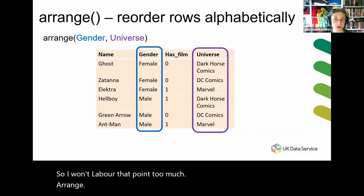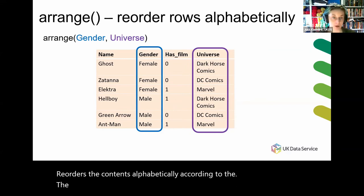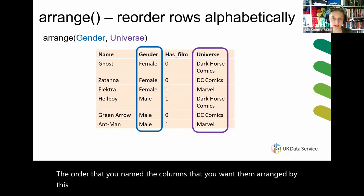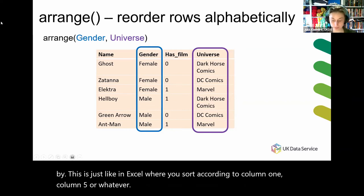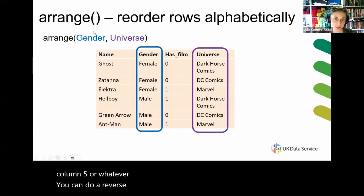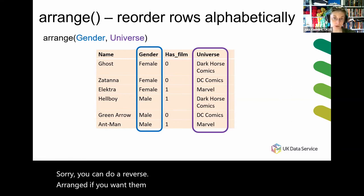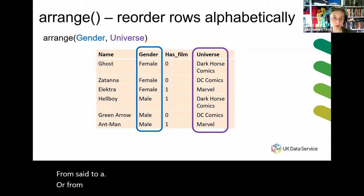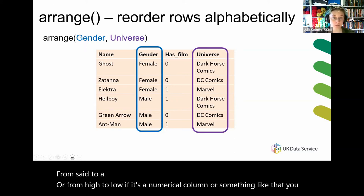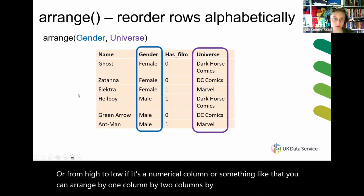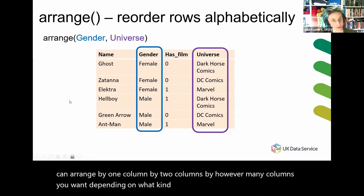Arrange reorders the contents alphabetically according to the order that you name the columns you want them arranged by. This is just like in Excel where you sort according to column one and column five or whatever. You can do a reverse arrange if you want them to go from Z to A, or from high to low if it's a numerical column. You can arrange by one column, two columns, or however many columns you want.